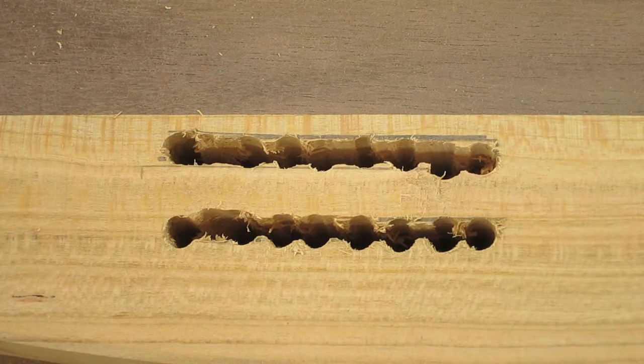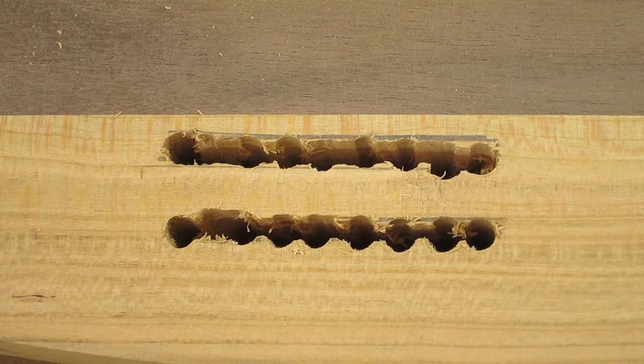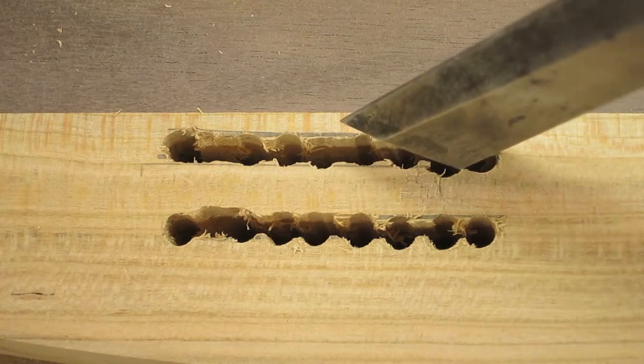Now even after you go through the coping saw, you're still going to have these ragged edges. So you're going to take a sharp chisel and just pare down the edges here.